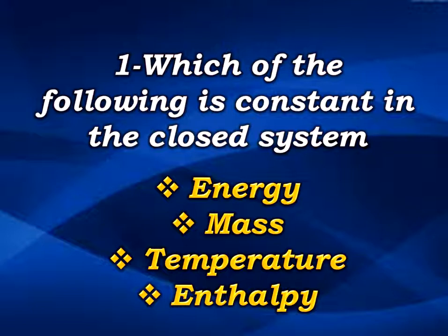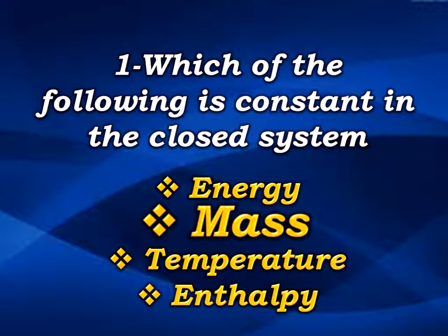The first question: which of the following remains constant in a closed system — energy, mass, or temperature? A closed system is a part of our environment that contains matter and energy. The answer is mass, because mass does not change inside a closed system.